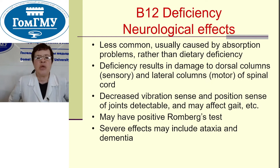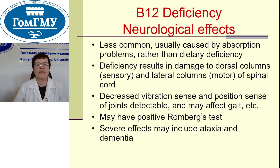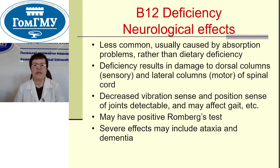B12 deficiency anemia. Neurological effects are less common and usually caused by absorption problems rather than dietary deficiency. Deficiency results in damage to dorsal columns — sensory — and lateral columns — motor — of the spinal cord. Decreased vibration sense and position sense of joints are detectable. May have positive Romberg test. Severe effects may include ataxia and dementia.